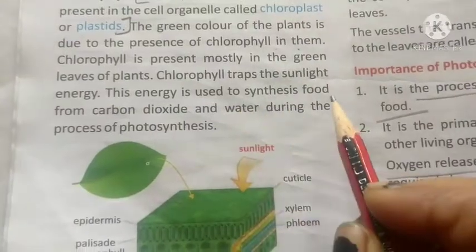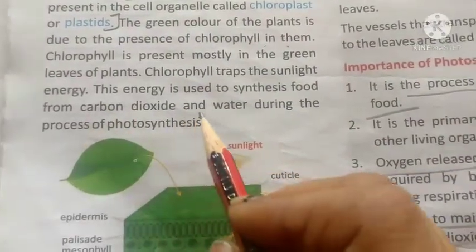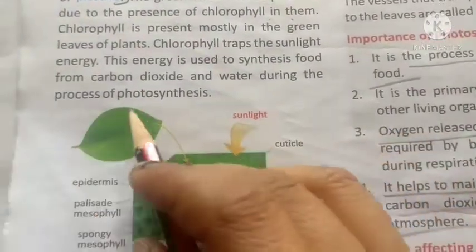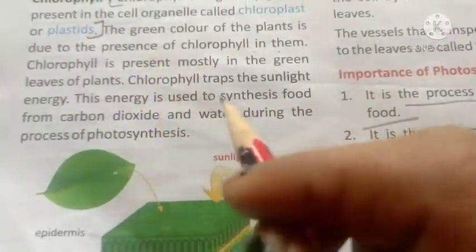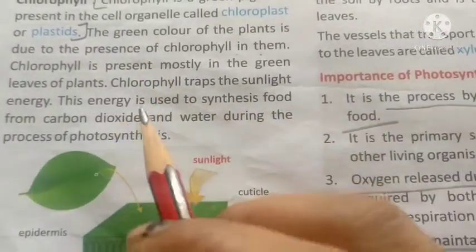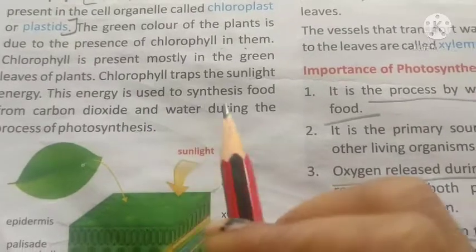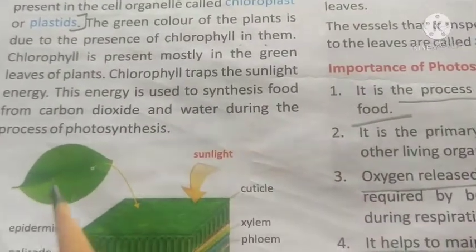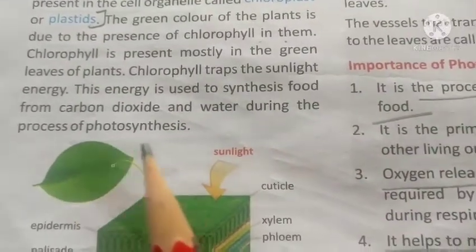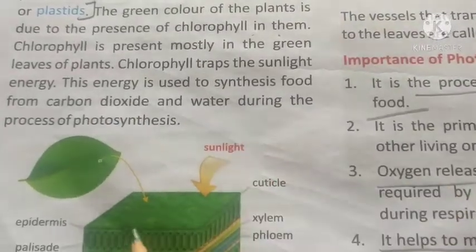Chlorophyll absorbs sunlight energy during the process of photosynthesis. This energy is used for food synthesis using sunlight, carbon dioxide, and water.